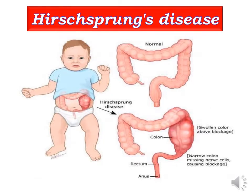Hirschsprung disease — what we call congenital megacolon or colonic aganglionosis — is by definition a functional intestinal obstruction. It is not mechanical, but functional. It results from loss of peristalsis because of the congenital absence of ganglion cells in a segment of the bowel.